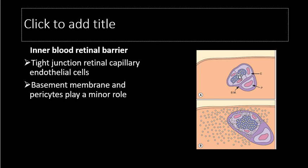This is the endothelial cell in the vascular lumen, and this is the fluorescent dye which is within the vascular lumen. If the endothelial tight junctions are intact, this dye remains mainly vascular. But when these tight junctions are disrupted, the dye leaks out of the blood vessels.